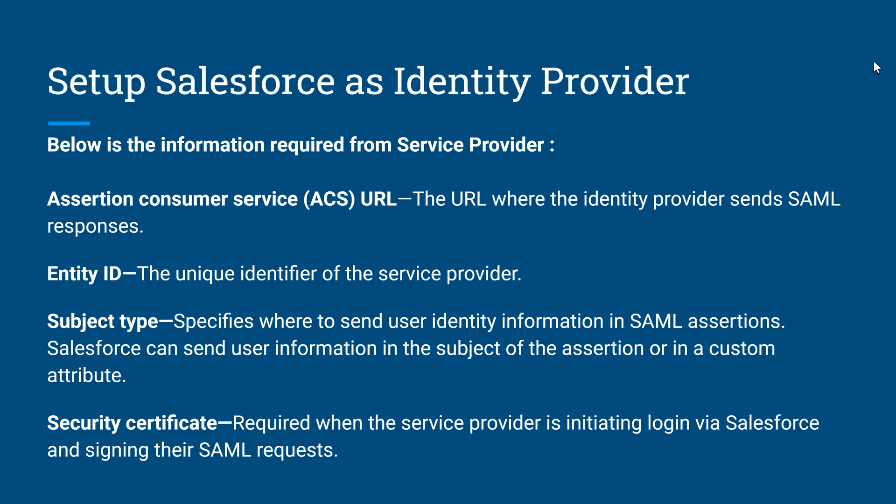The first one is ACS URL — that is Assertion Consumer Service URL. This is the URL where the identity provider sends the SAML response. In our previous sessions we learned that whenever an identity provider authenticates a user, it sends a SAML response to the service provider.